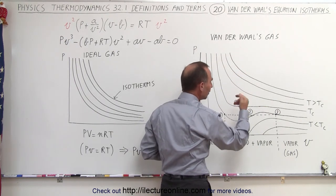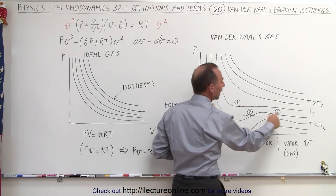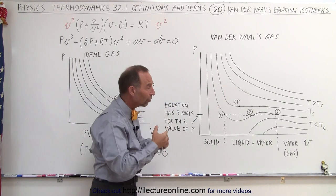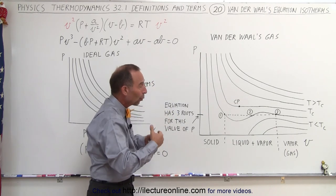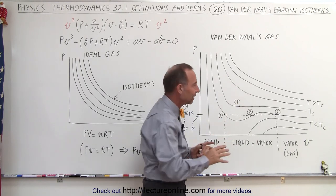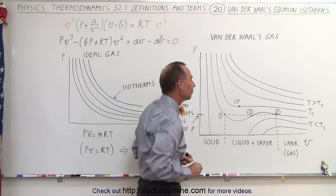Eventually, when the temperature lowers far enough, we get a point on the graph which is considered the critical point at the critical temperature, where all three phases, solid, liquid, and vapor or gas can exist at those particular conditions for pressure, volume, and temperature at the same time.